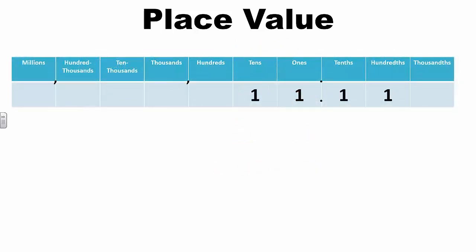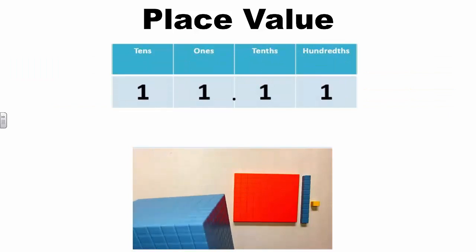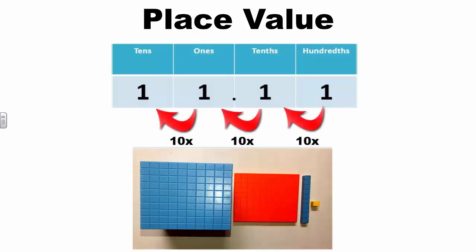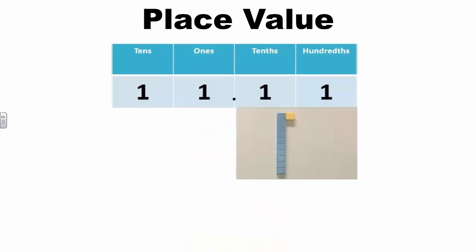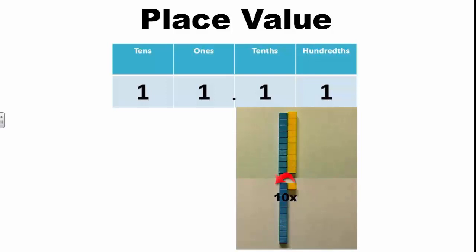In fifth grade, students continue to build on this concept with decimals. Additionally, they explain the idea that a digit in one place is one-tenth of what it represents in the place to its left. Let's look at an example with the number 11 and 11 hundredths. In this example, the large cube represents one-ten, the flat represents one-one, the rod represents one-tenth, and the small cube represents one-hundredth. Students investigate that each digit is 10 times the value of the digit in the place to its right. We can model this with base 10 blocks. If I multiply the hundredth cube by 10, we can see that it is the same size as the tenth rod. Therefore, the value of one-tenth must be 10 times the value of one-hundredth.